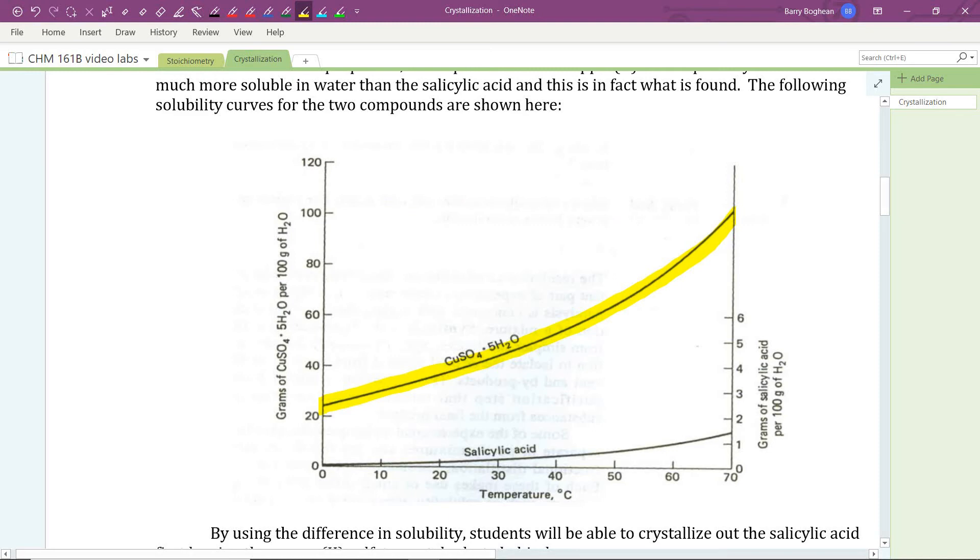By comparison, on the right axis we have the solubility of salicylic acid in grams per 100 grams of water. Near 0 it's essentially 0, and it rises slowly with temperature increase, reaching a maximum of about 1.5 grams of salicylic acid per 100 grams of water at 70 degrees C.